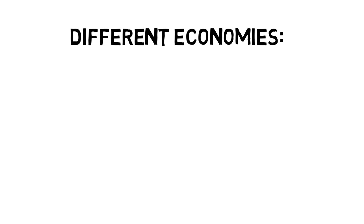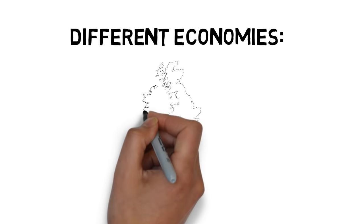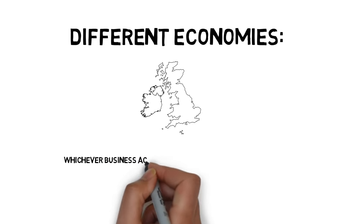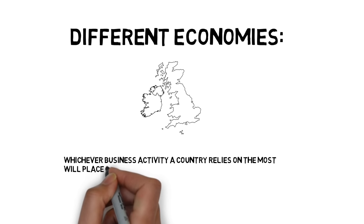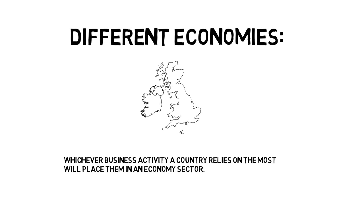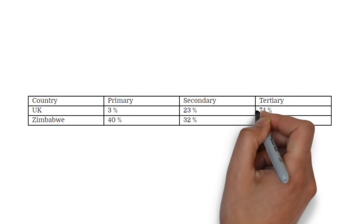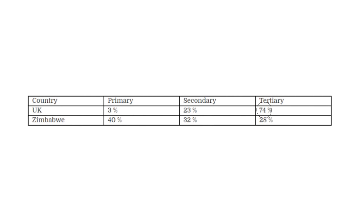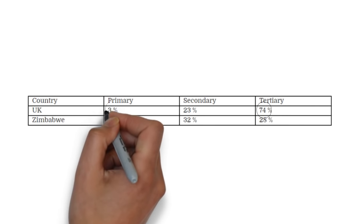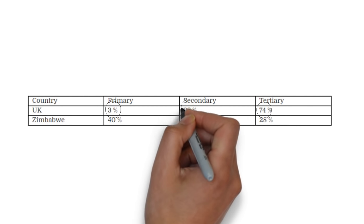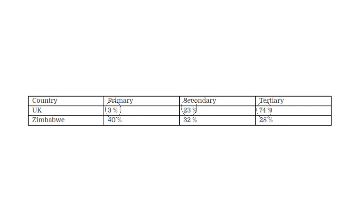Countries are classified by the size of different sectors of business activity. This means whichever business activity a country relies on the most will place them in an economy sector. Every country in the world focuses on a different sector. For example, the UK has 74% Tertiary, meaning nearly all businesses are services such as banks, insurance companies, and hospitals. Only 3% are extracting raw materials like gas, oil, or coal, and 23% turns raw resources into usable goods, which may be imported from another country. This is a developed country.